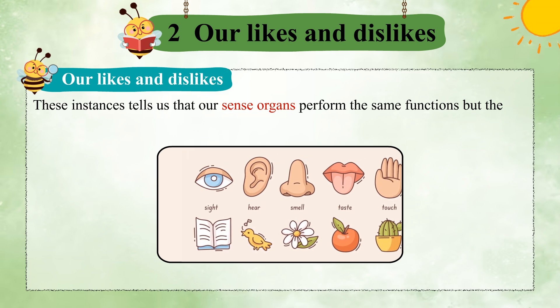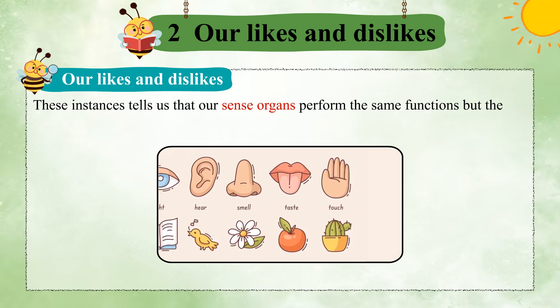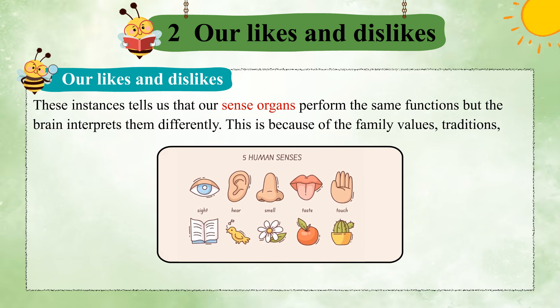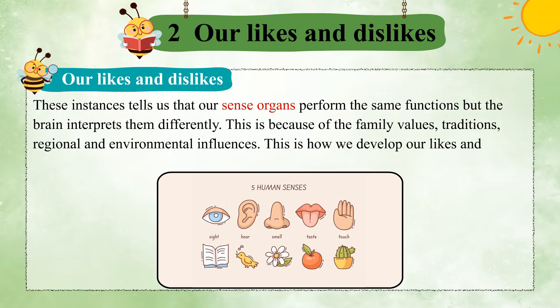These instances tell us that our sense organs perform the same functions, but the brain interprets them differently. This is because of the family values, traditions, and regional and environmental influences. This is how we develop our likes and dislikes and a particular way of life — our culture.